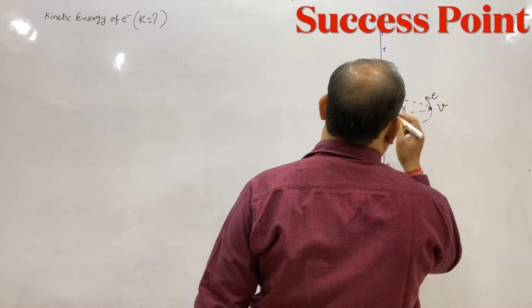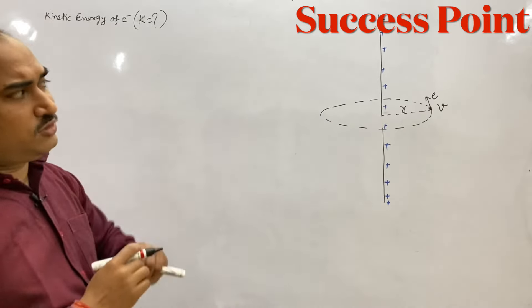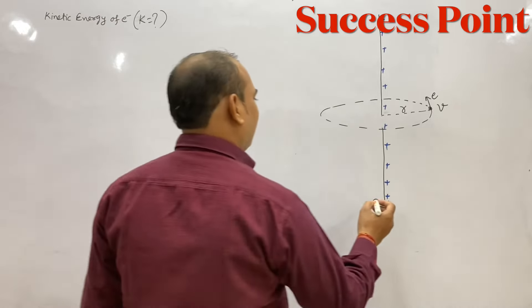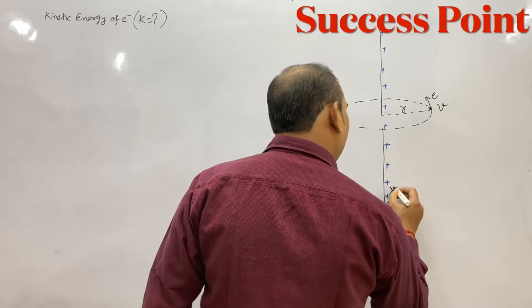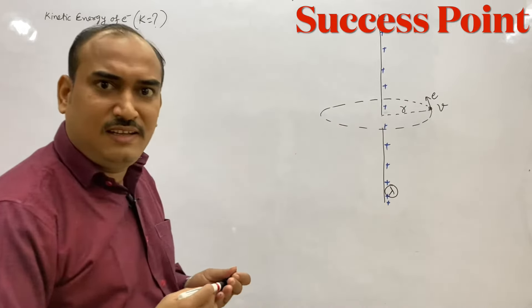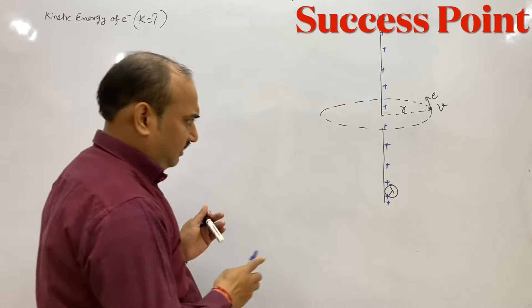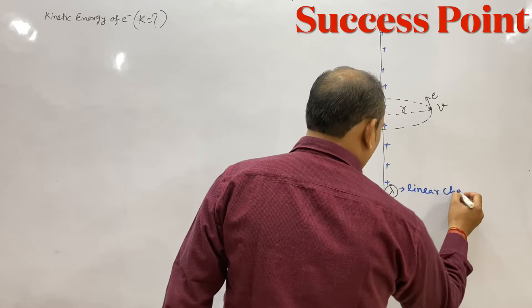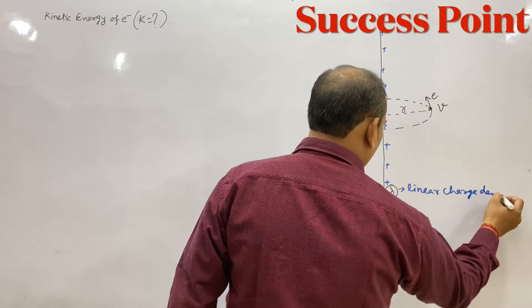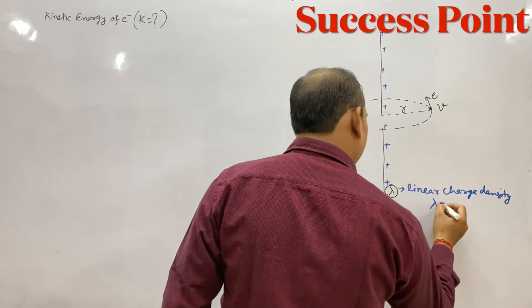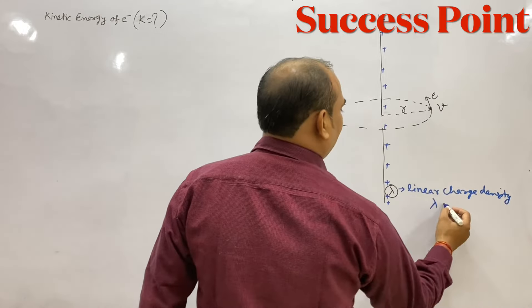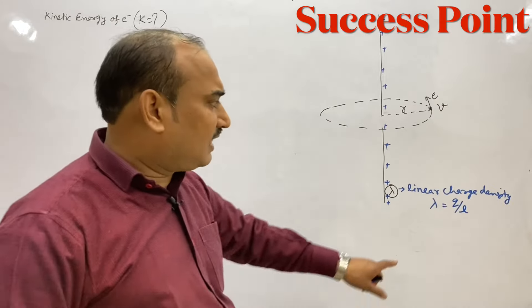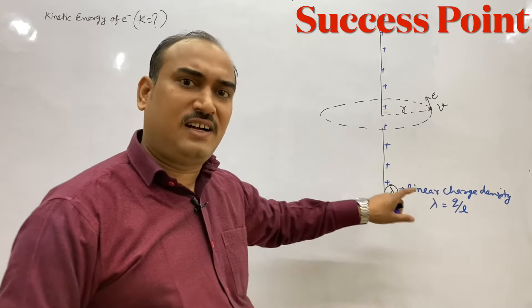Electron कुछ distance r पर revolve कर रहा होगा। हमसे इस question में पूछा गया है: find the kinetic energy of the revolving electron in terms of lambda, जो कि linear charge density of the wire है। Lambda बराबर q upon l होता है — the charge present at unit length is called linear charge density।